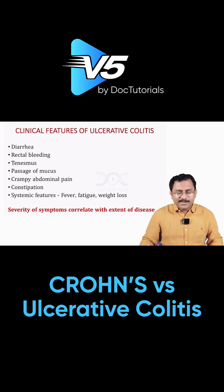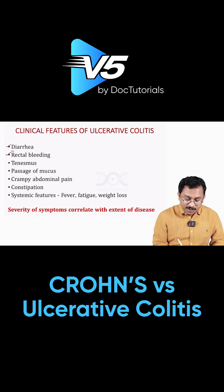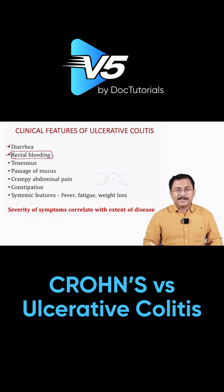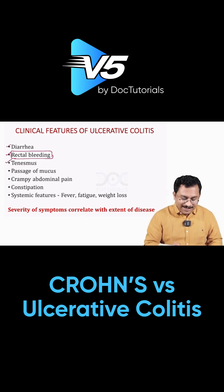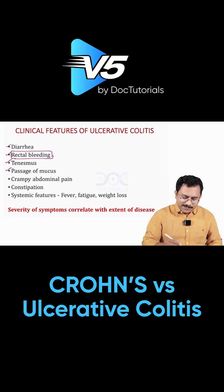Clinical features of ulcerative colitis: patients can have diarrhea and rectal bleeding — rectal bleeding is a very important feature of ulcerative colitis. You can also have that frequent urge to pass stools even when you do not have stools, which is called tenesmus. Passage of mucus can be there — sometimes blood alone, sometimes blood with mucus, sometimes mucus alone.